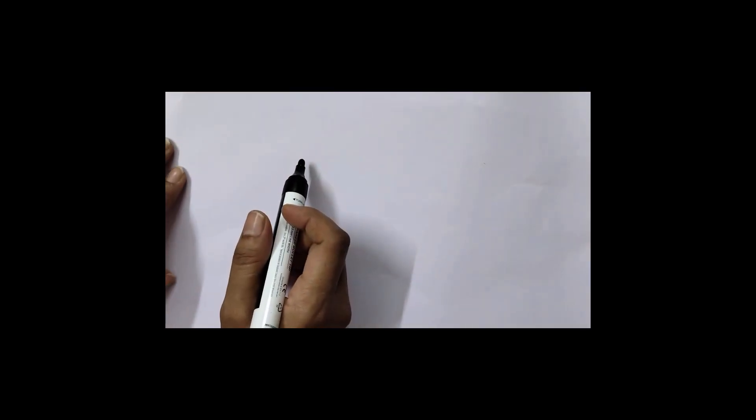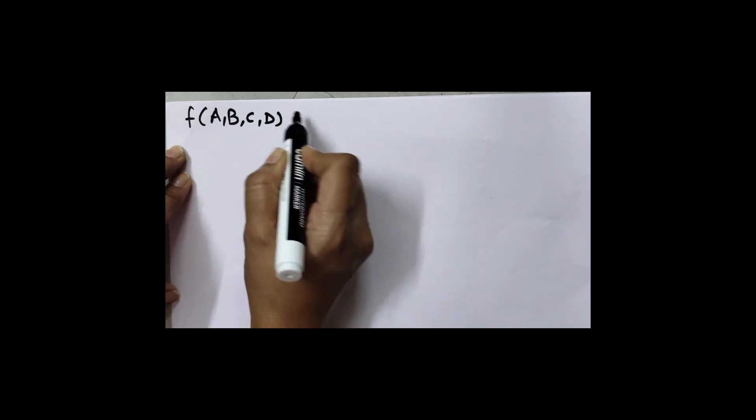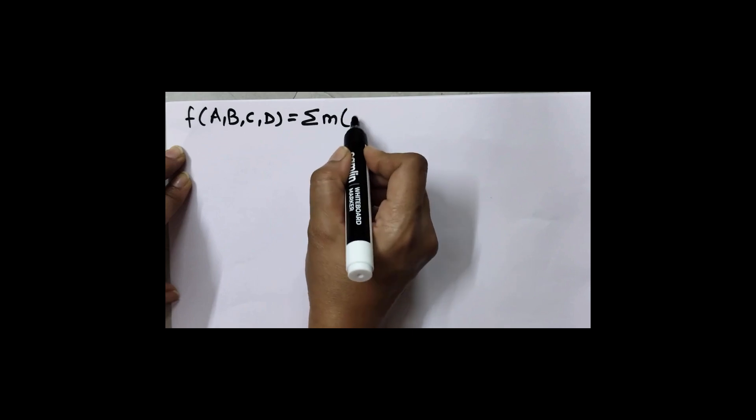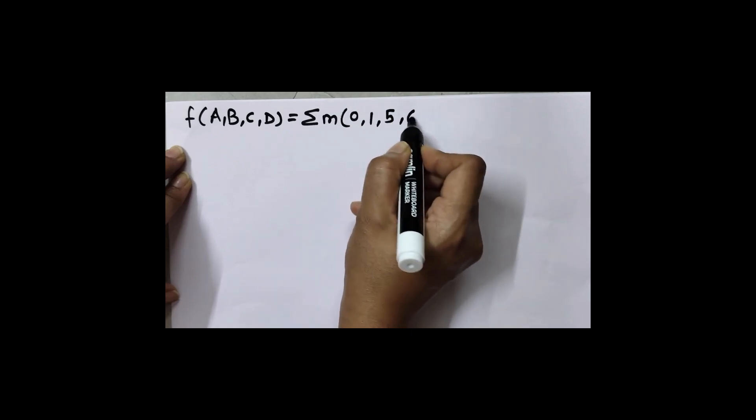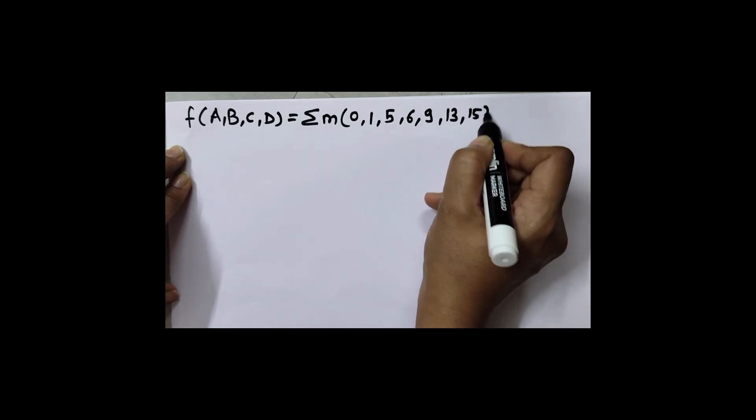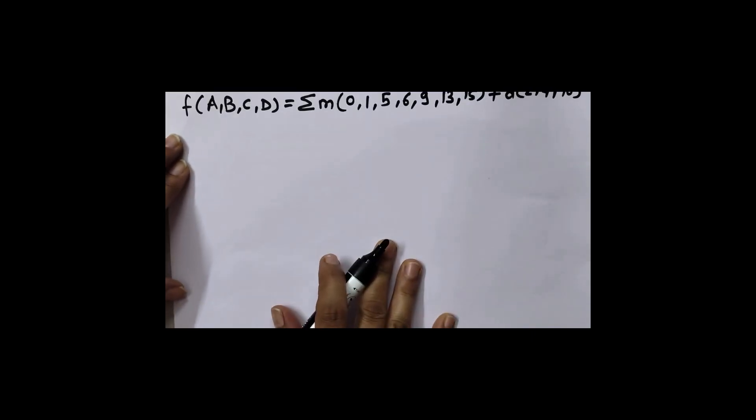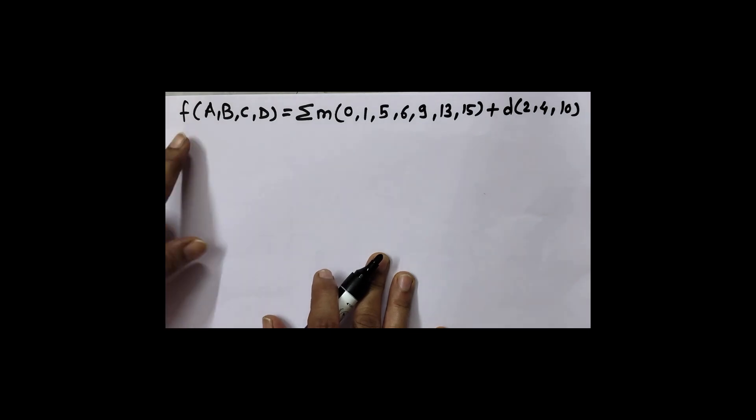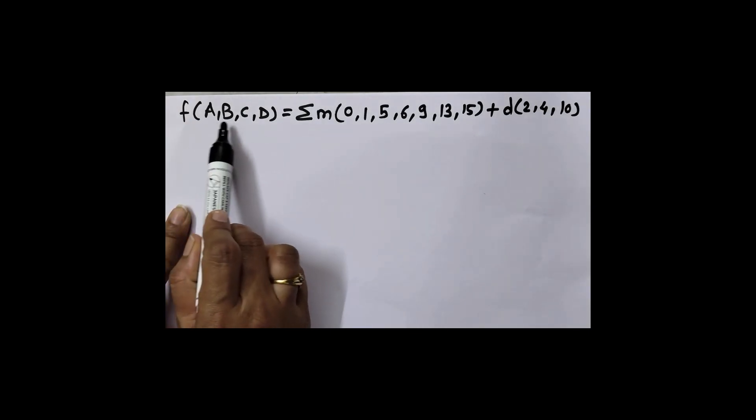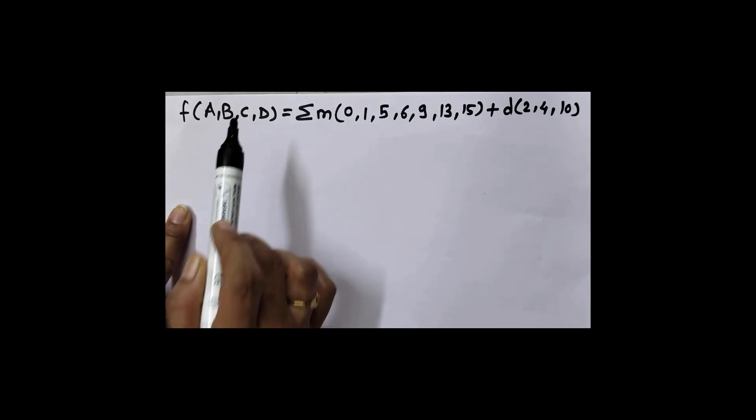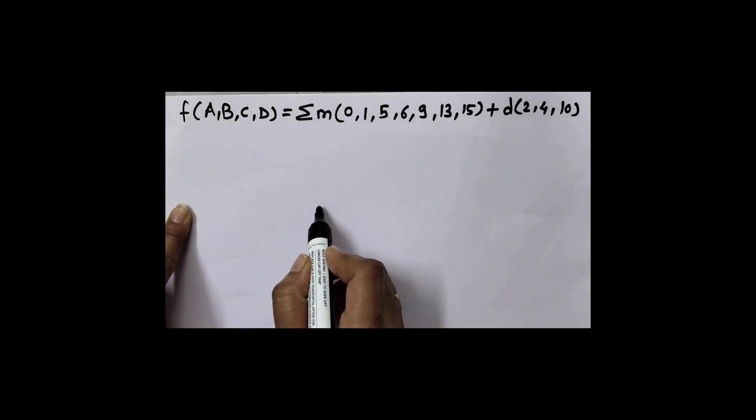Let's see an example of 4 variable K-map. I'll write function f(A,B,C,D) = summation of m, min terms 0, 1, 5, 6, 9, 13, 15, and I'll take some don't care conditions also. Don't care conditions are represented using d(2, 4, 10). This is our equation. Number of variables are 4, so when number of variables are 4, it means number of cells in K-map are 2 raise to 4. Number of cells are 16, so I'll first draw K-map for 16 cells.